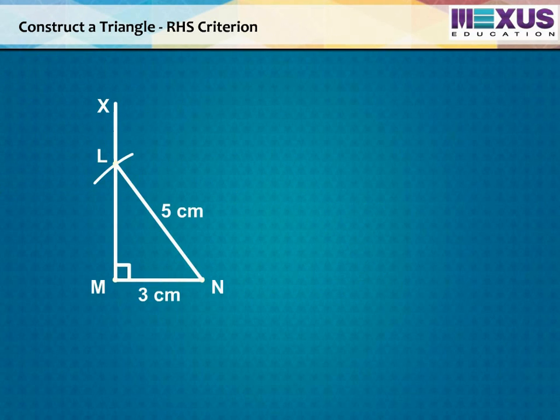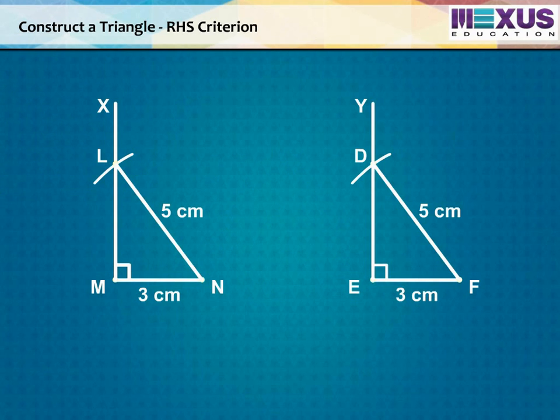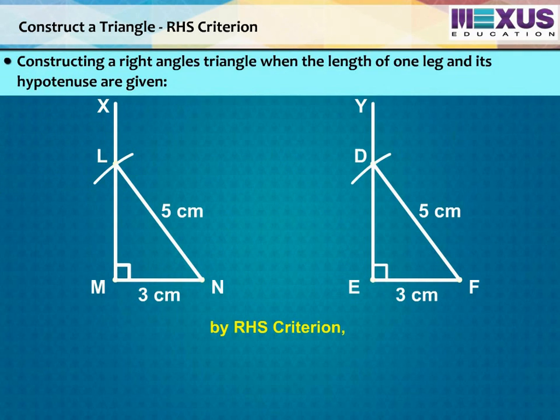Now, if we construct a triangle DEF with the same parameters as triangle LMN then, by RHS criterion, we can say that triangle LMN is congruent to triangle DEF.